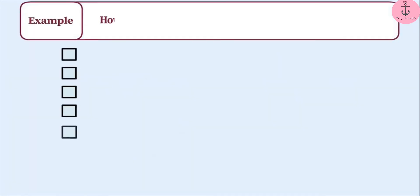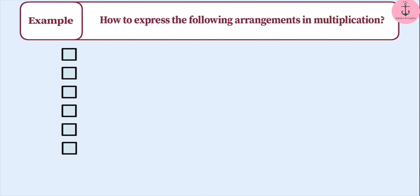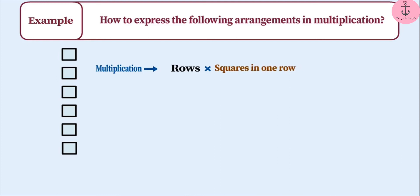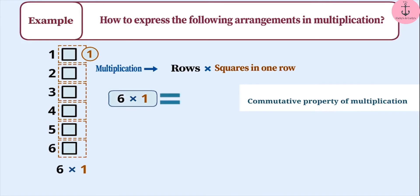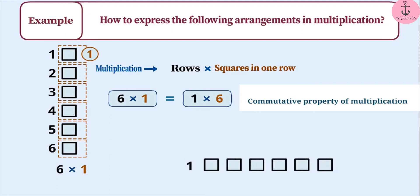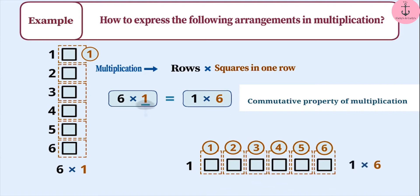Next example: how to express the following arrangements in multiplication. Here we have some rows of squares. To express this in multiplication, we write the number of rows first and then the number of squares in each row. The number of rows is 6 and each row has one square, so we express this as 6 multiplied by 1. By using the commutative property of multiplication, we can also write it as 1 multiplied by 6. Here 1 is the multiplicative identity, so whether we write 6 multiplied by 1 or 1 multiplied by 6, the result will be 6.